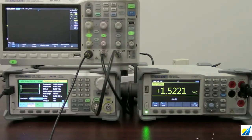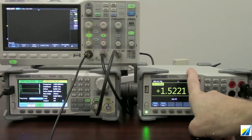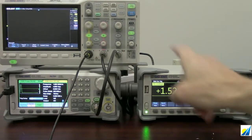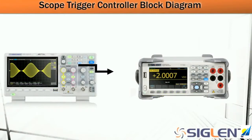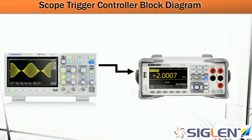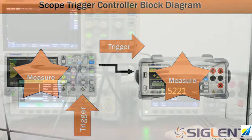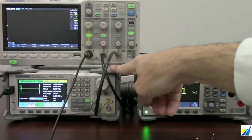The oscilloscope is then going to have its external trigger connected to this digital multimeter. This is the SDM3045X. So the oscilloscope is going to trigger, measure on channel 1 and channel 2, and simultaneously send a trigger output to the multimeter so that it can make an AC voltage measurement. And all of those are going to be synchronized.